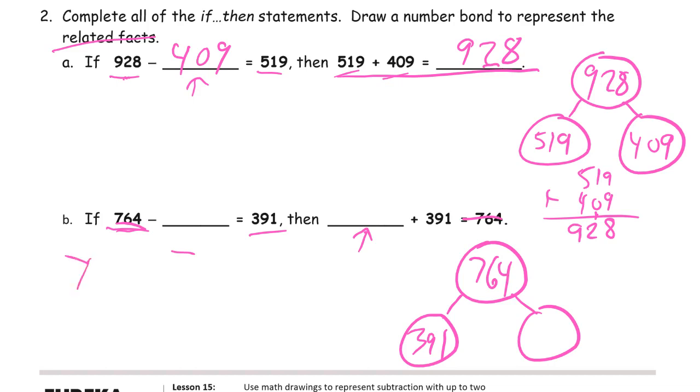So we know the whole, 764. And we know one of the parts, 391. And when we find out what the other part is, we just subtract. 4 minus 1 in our ones place. That's 3. 6 minus 9. Can't do that. So we have to decompose that 100. Now we have 16 tens. We'll use 16 minus 9 for our tens place. That's 7. And 6 minus 3 in our hundreds is 3. So it's 373.